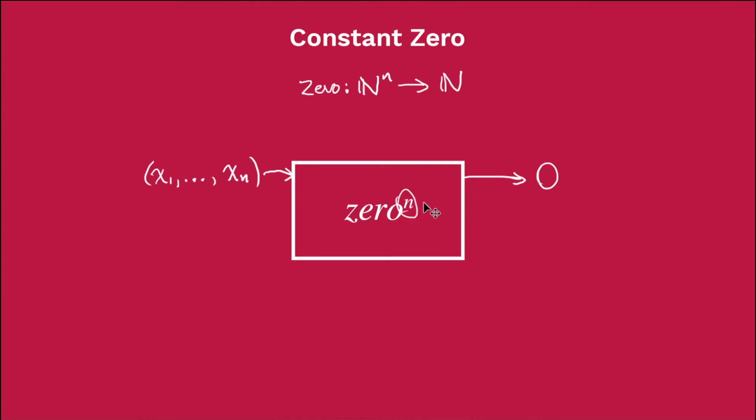Now this n is to denote the fact that actually this isn't a single function, this is a family of functions. So for some concrete examples of the 0 function, we could have 0 with n equals 1, and this is the function that takes one element and returns 0, so I can give this an argument 3 for example, and that will give me back 0.